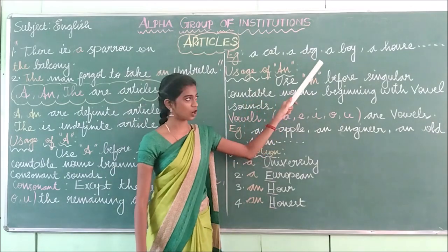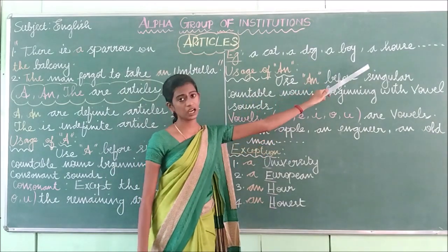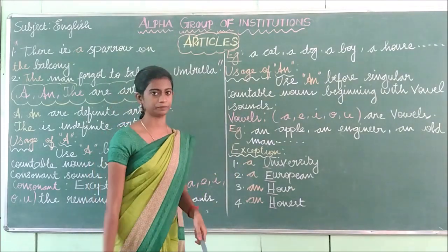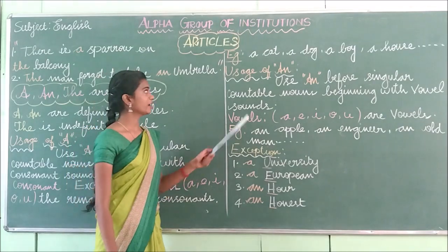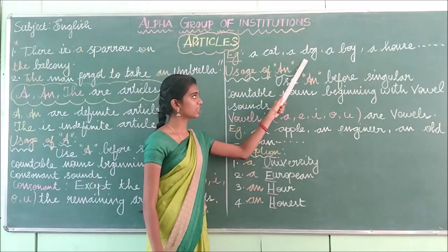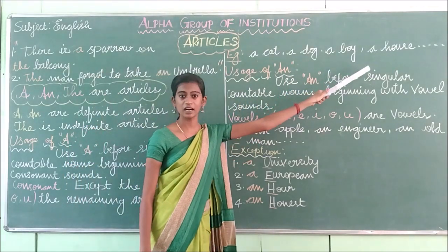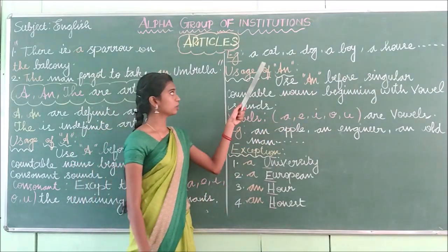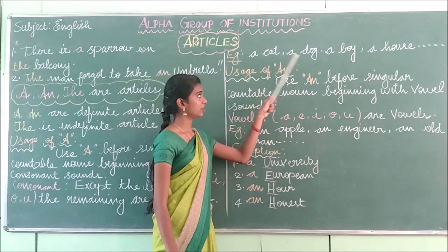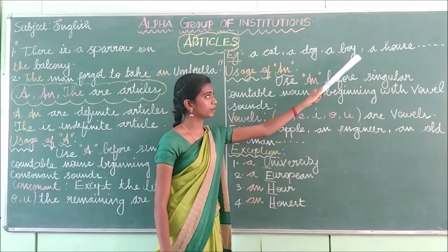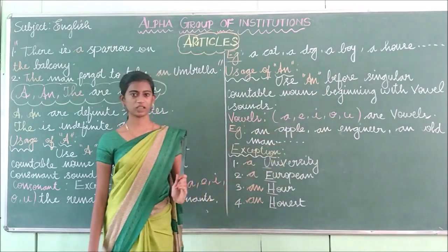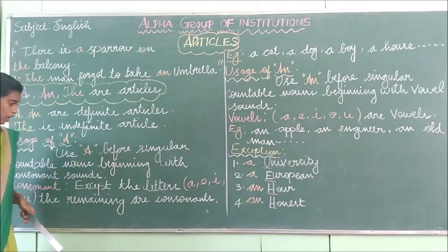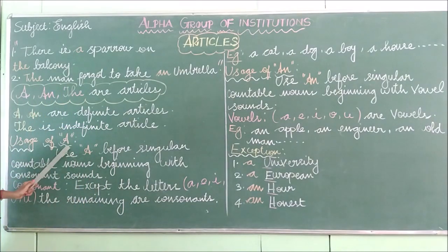Examples: a cat, a dog, a boy, a house. These are all singular and we can count them, so they are singular countable nouns. These words start with consonant sounds — C, D, B, H. So if the word starts with a consonant sound, you have to use the article 'a'.